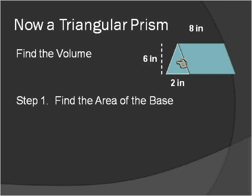In this case, the triangle's consistent. It goes straight through to the back. So if we find the area of this triangle and then we multiply that times the height, we'll be able to find the volume of this triangular prism.